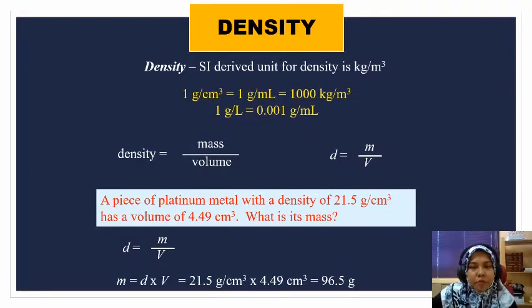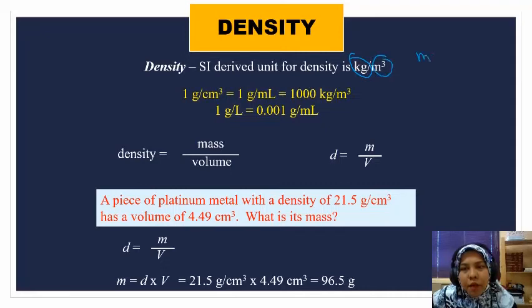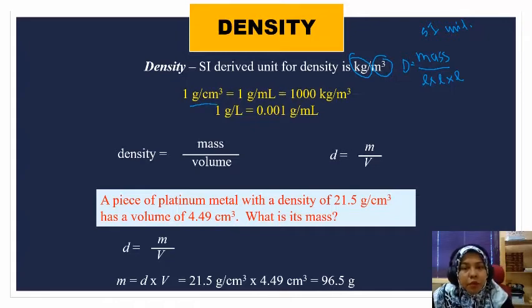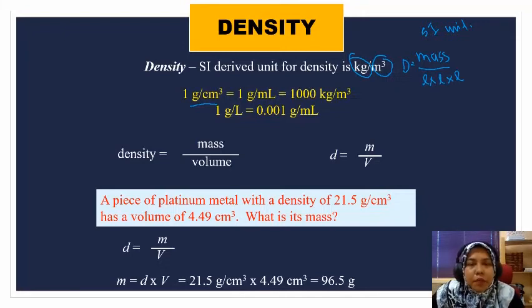The next derivation unit is density. For density, it's derived from kilogram per meter cubic, which means mass over volume. This is the SI unit for density. In chemistry, usually we use gram per centimeter cubic instead of kilogram per meter cubic because chemistry deals with very small amounts, so it's not suitable to use kilogram per meter cubic.